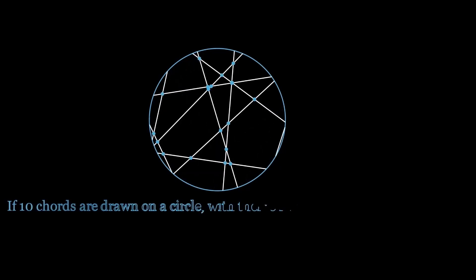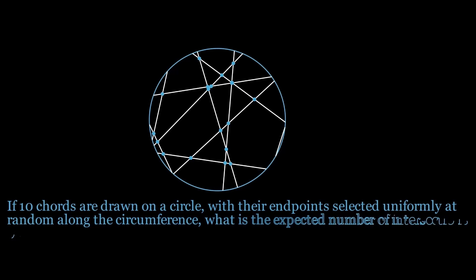So if 10 chords are drawn on a circle, with their endpoints selected uniformly at random along the circumference, what is the expected number of intersections between the chords? Pause the video here if you want to give it a try.